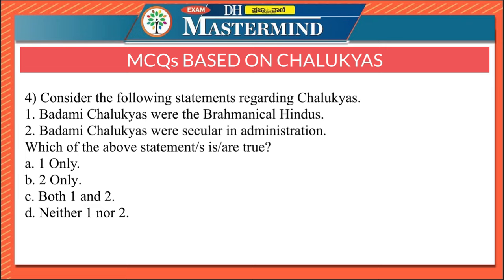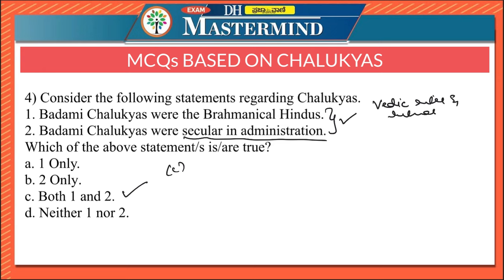The fourth question: the Badami Chalukyas were Brahmanical Hindus, and they were secular in administration. Both statements are correct, Option C. The Badami Chalukyas were Brahmanical Hindus but gave respect to all religions, hence secular. Importance was given to Vedic rites and rituals; Pulakeshi 1 performed the Ashwamedha sacrifice. Temples in honor of Vishnu, Shiva, and other gods were built. Xuanzang mentioned the decline of Buddhism in the western Deccan, yet Badami Chalukyas remained secular.